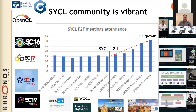At SC19, the number of SYCL events exploded from two to three SYCL events in 2018 to six to eight SYCL-related events in 2019 in the form of papers, talks, BOFs, and related keynotes at various workshops. In the past, SYCL held an annual workshop called DHPCC++, in IWOCL, as it was not yet its own working group. On September 22nd, 2019, that date became independence day for SYCL because SYCL became its own working group, and now is held as an integrated conference, SYCLCon, with IWOCL.